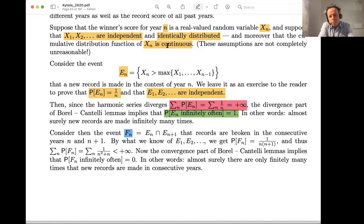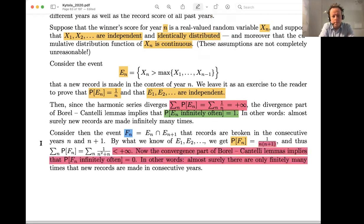If you now compute things, you need to take a bit of time, but if you do, you can calculate that the probability of having a record on year n and the next year is one over n times n plus one. This sum is of the order one over n squared. And if you look at this sum of these events, this gives you a finite sum.